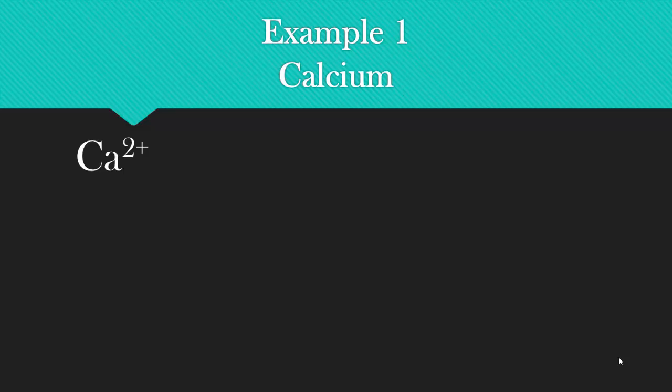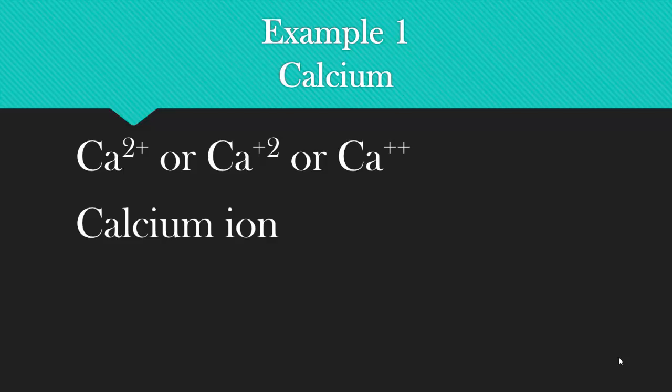And basically you go from this to this. This gets written symbolically as calcium two plus, or calcium plus two, or calcium plus plus. And you say you have the calcium ion or the calcium cation. As you'll discover next year when you take AP chemistry, I write my ions this way, the symbol followed by the number followed by the plus or minus sign. And then just for simplicity, I always call it just the ion.